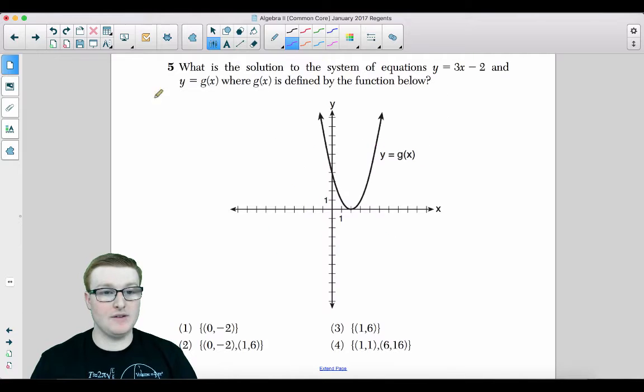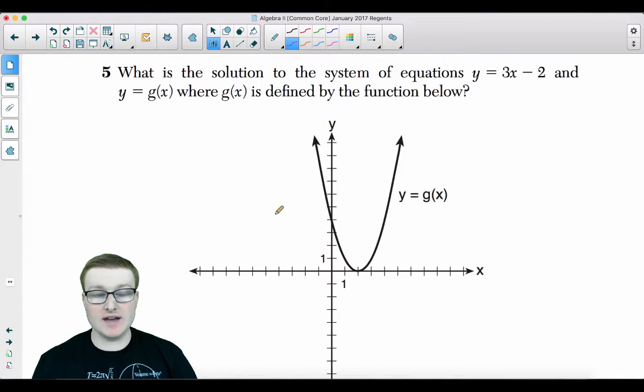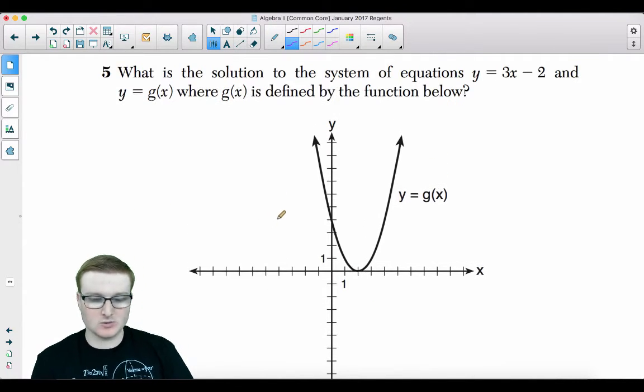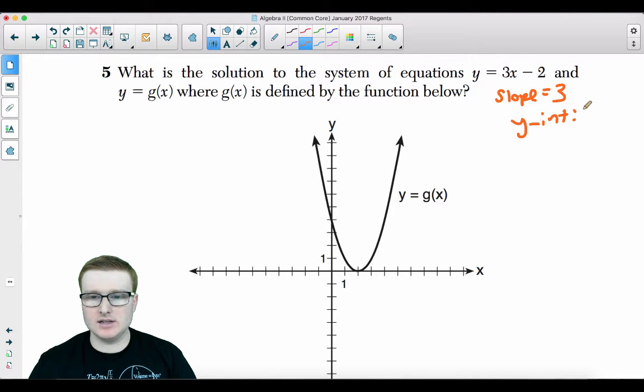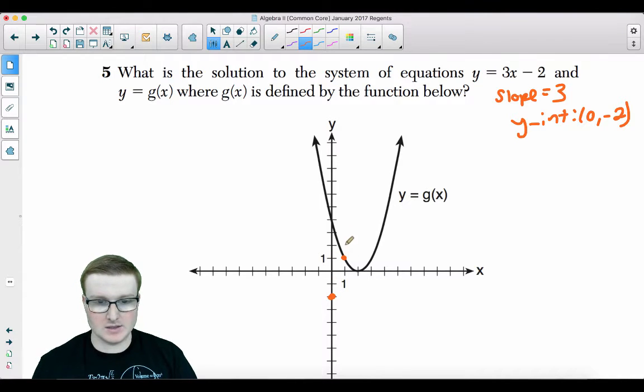Moving on to number 5. What is the solution to the system of equations y equals 3x minus 2 and y equals g(x), where g(x) is defined by the function below? So the best thing to do is either you could graph this line on this graph, or you could actually figure out what this parabola equation is. I say it's a little bit easier to graph this line. It's very simple. The slope is 3, and the y-intercept is 0, negative 2. So graph this and go up 3 to the right 1. There's my first intersection point. Up 3 to the right 1.